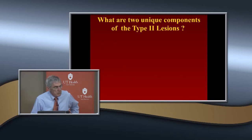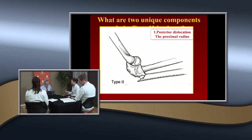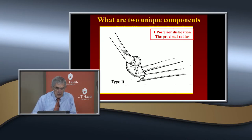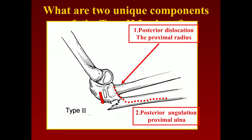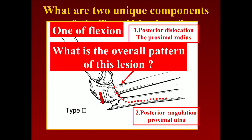What are the two components of a type 2 lesion? The most obvious thing everybody focuses on is the posterior dislocation of the proximal radius. But very importantly, you also have a posterior angulation of the proximal ulna. The overall pattern of this injury is one of flexion.